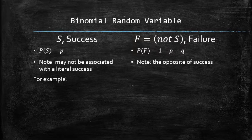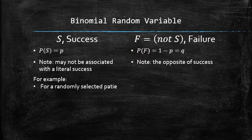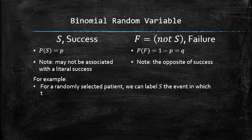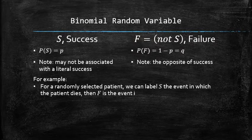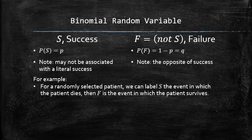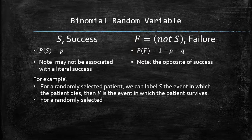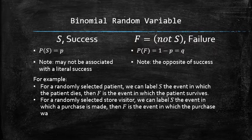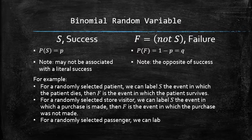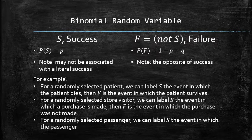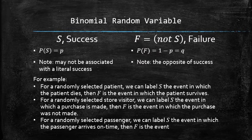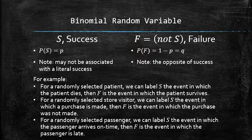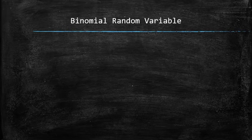Note that success may not be associated with a literal success; failure is simply the complementary event of success. For example, for a randomly selected patient, we can label S as the event in which the patient dies, and then F is the event in which the patient survives. For a randomly selected store visitor, S can be the event in which the visitor arrives on time, and F will be the event in which the visitor is late.